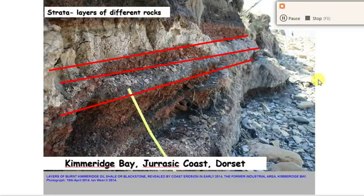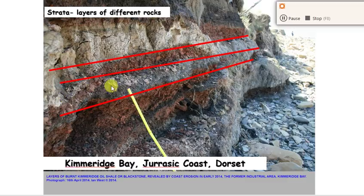The next element of geological structure is strata, which just really means the layers of different rocks. A bit like a cake — if you look at this, we've got one layer of rock, another layer of rock in a different colour, another layer of rock, and it carries on. There are five or six just in this photograph. So strata means different layers of rock.